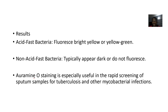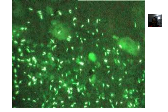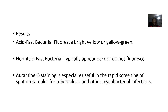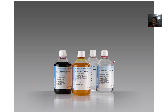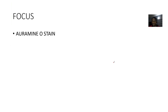For results: acid-fast bacteria will always appear bright yellow or bright green. If they are not acid-fast, they will appear dark or will not fluoresce. It's quite simple and easy.